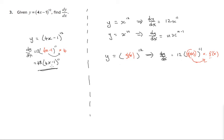So for 4x minus 1 to the 12, we get 12 times 4x minus 1 to the 11, times what you get when you differentiate 4x minus 1, which is 4. And 4 times 12 is 48, times 4x minus 1 to the power 11.